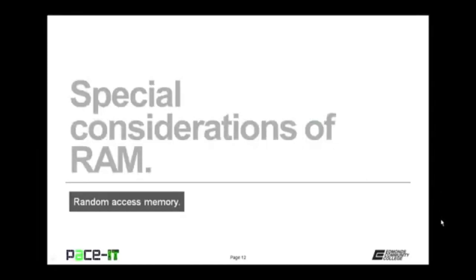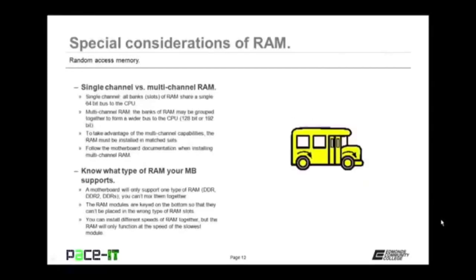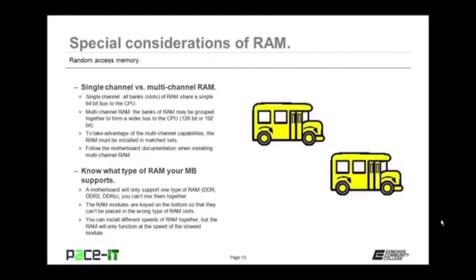Now let's move on to some special considerations of RAM. The first consideration is single-channel versus multi-channel RAM. In single-channel RAM, all banks or slots of the RAM make up a single 64-bit bus to the CPU. In multi-channel RAM, the banks of RAM may be grouped together to form a wider bus — 128 bits or 192 bits wide. To take advantage of multi-channel abilities, the RAM must be installed in matched sets and you need to follow the motherboard documentation when installing.